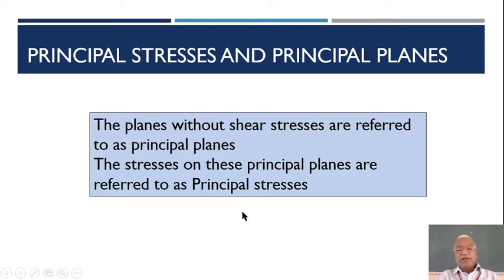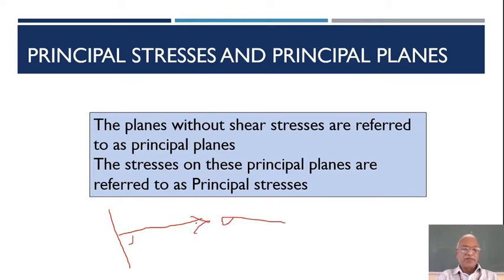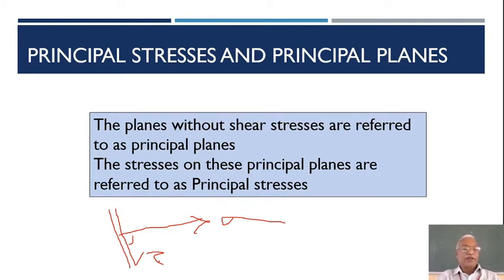On any plane, there will be a normal stress — perpendicular to the plane, which we call sigma, which may be tensile or compressive — and parallel to the plane there will be a shear stress tau, which tries to rotate the element clockwise or anti-clockwise. Generally, both normal stress and shear stress will be present. A plane with only normal stress and no shear stress is called a principal plane.